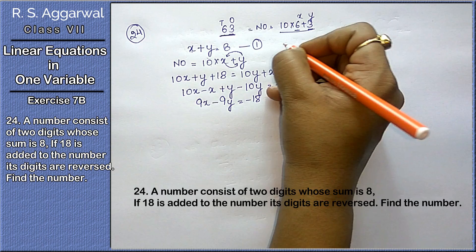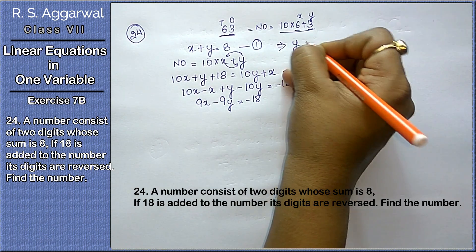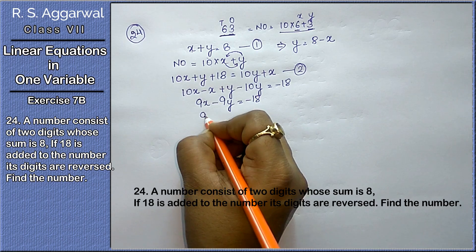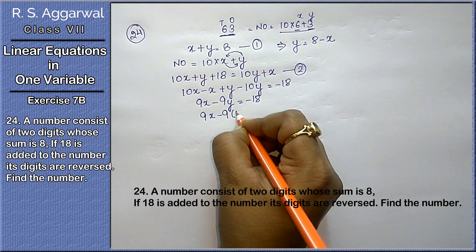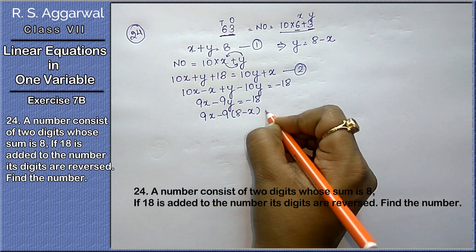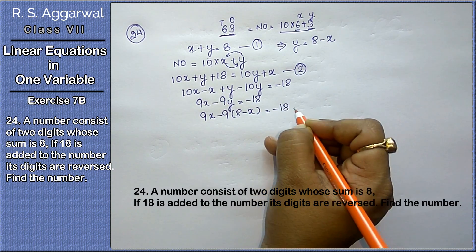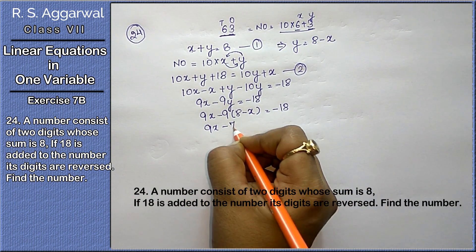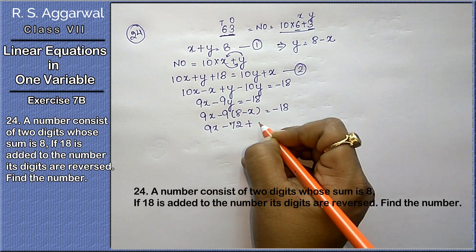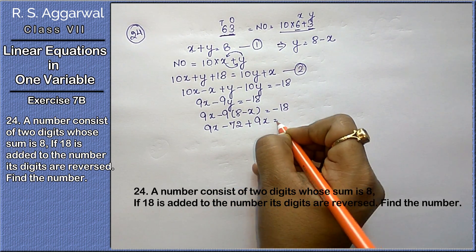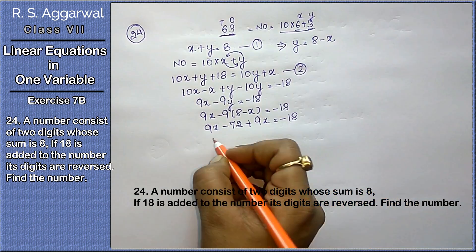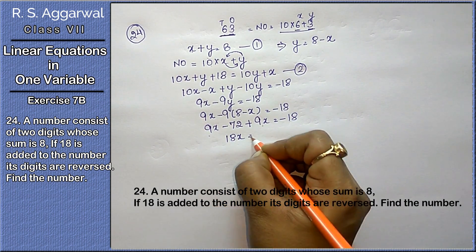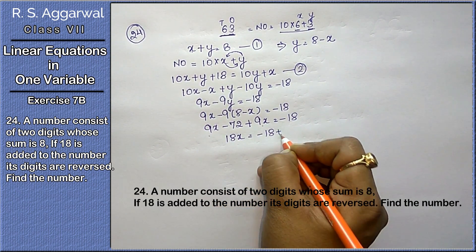This becomes 9x minus 9y equals to minus 18. Now from here, y's value, from the first equation, y equals to 8 minus x. Putting it here: 9x minus 9 into (8 minus x) equals to minus 18.